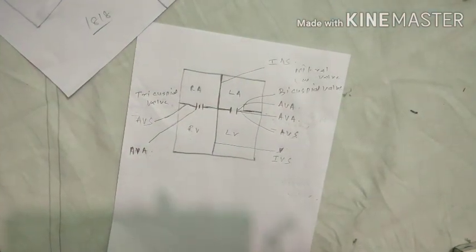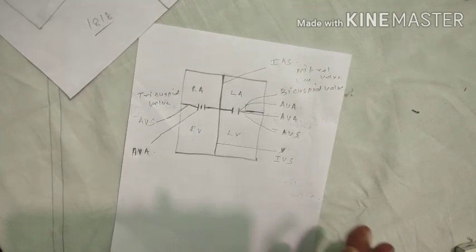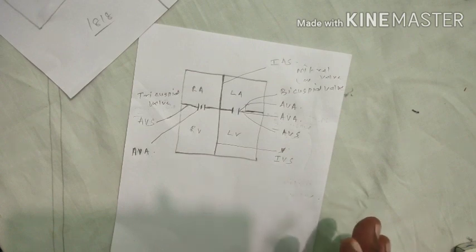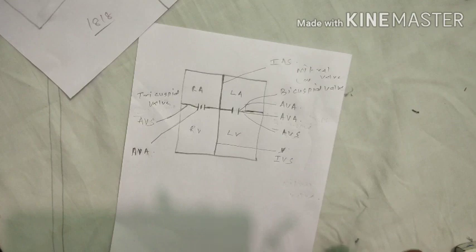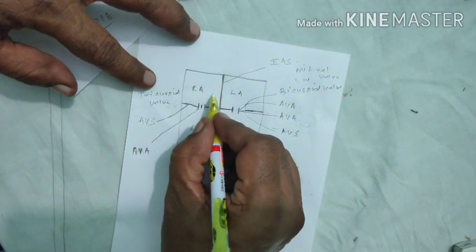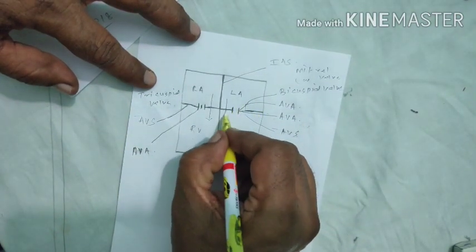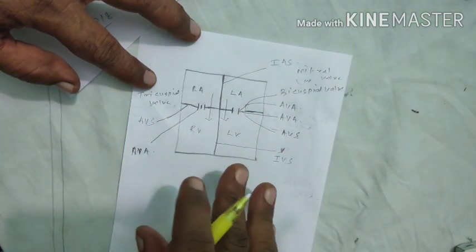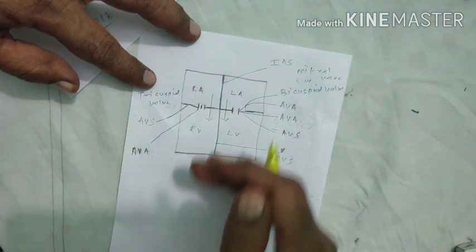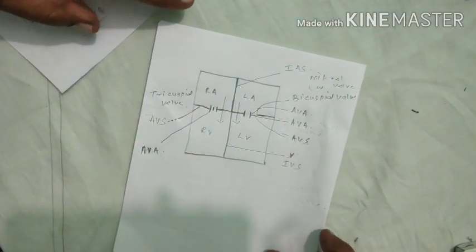So we have studied two valves: the tricuspid valve between the right auricle and right ventricle, and the bicuspid valve between the left auricle and left ventricle. The main function of these valves is to allow blood to flow from the right auricle to right ventricle, and from the left auricle to left ventricle, but they will not allow the back flow of blood.